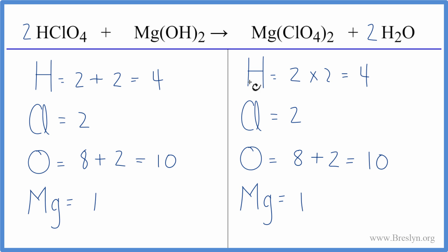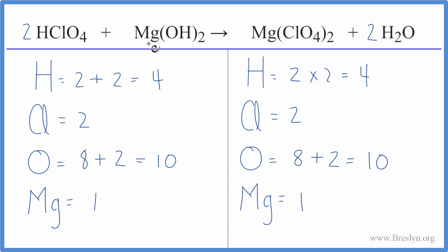The key: be very careful when counting the hydrogens, because you have them in the HClO₄ and in the magnesium hydroxide. The same goes for oxygens — it's usually a good idea to leave the oxygens for last when balancing. This is Dr. B with the balanced equation for HClO₄ plus Mg(OH)₂. Thanks for watching.